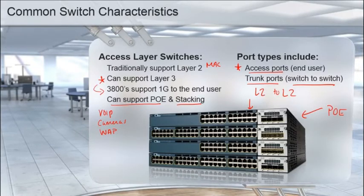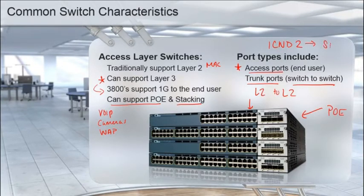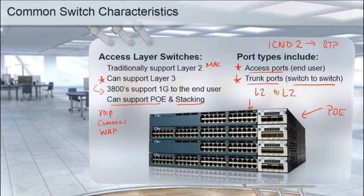When you move on to ICND2, one of the things we'll look at is that Spanning Tree Protocol runs on these trunk ports. Spanning Tree, or STP, is just a layer two loop prevention mechanism.